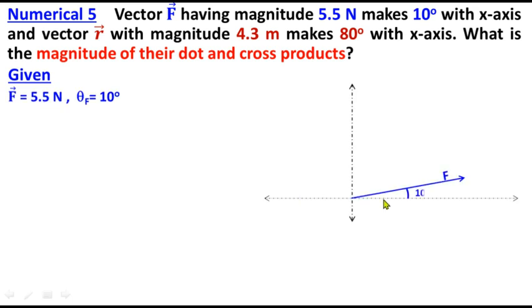Given: Vector F is 5.5 Newton which makes an angle with x-axis of 10 degrees, so we call this theta_F because it's vector F's angle. And vector r is 4.3 meter, that's its dimension or magnitude, and it makes an angle with x-axis of 80 degrees.